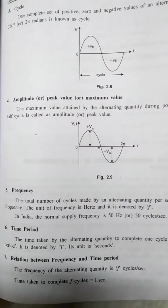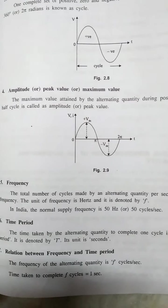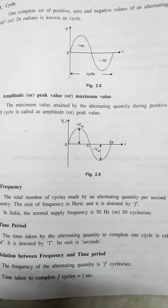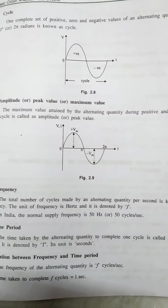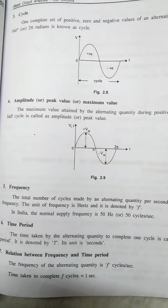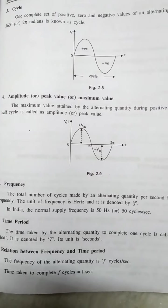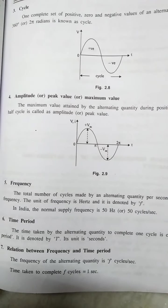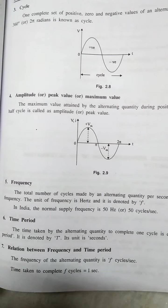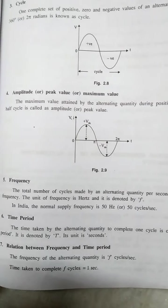Next, amplitude or peak value or maximum value. The maximum value obtained by alternating current or voltage during the positive and negative half cycle is called amplitude or peak value. In the positive cycle, plus Vm represents the peak value. In the negative cycle, minus Vm represents the peak value.